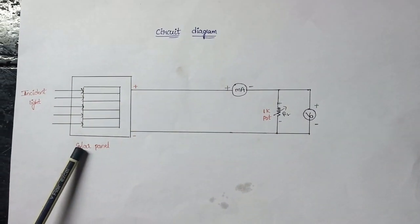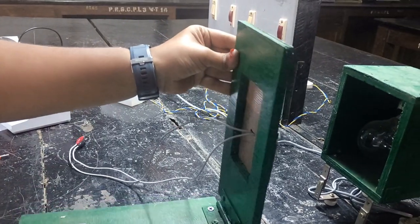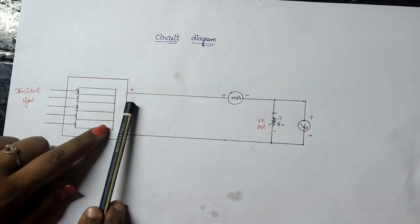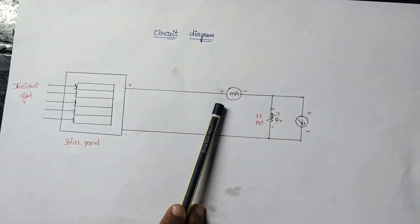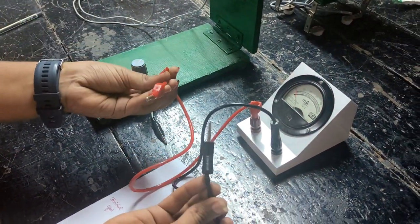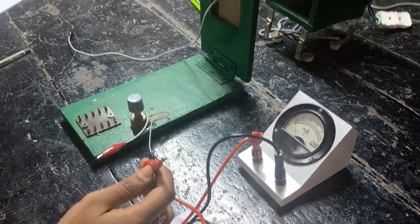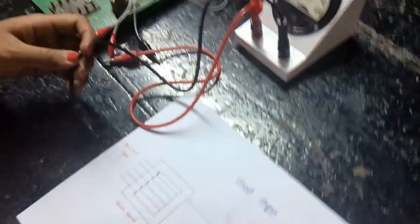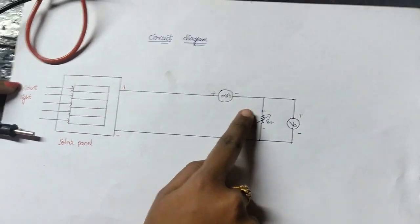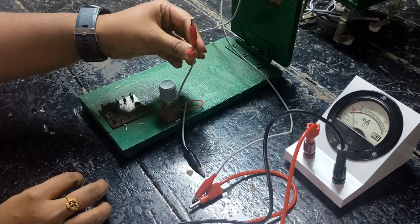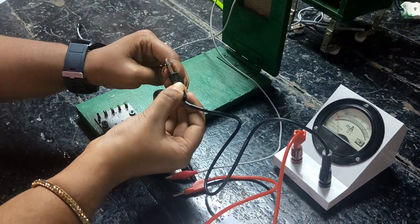Our solar panel is placed in front of the incident light, that is the 100 Watt bulb. The positive terminal of the solar panel is connected to the positive terminal of the milliammeter. This is our milliammeter. The negative terminal of the milliammeter is connected to the positive terminal of the load resistor.